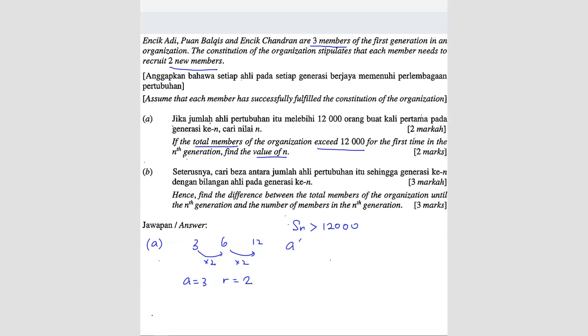SN formula is A. In this case, R is more than one. So I'll just straight away substitute. So you get three times two power n minus one over two minus one, exceed 12,000.